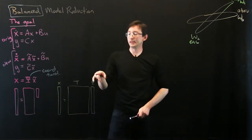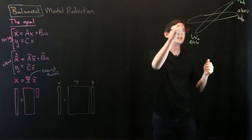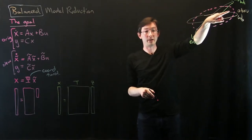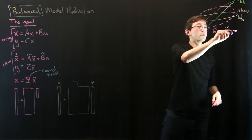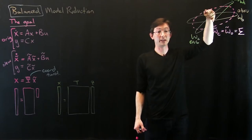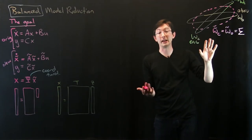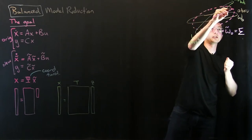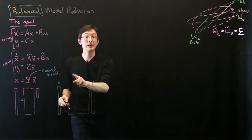What's really amazing is that there exists a coordinate transformation T — a special one out of all possible invertible matrices T — that essentially changes the coordinates so that both of these Gramians are equal. In these new coordinates, W_C equals W_O equals a diagonal matrix sigma. This diagonal matrix is ordered from most controllable and observable to least controllable and observable.